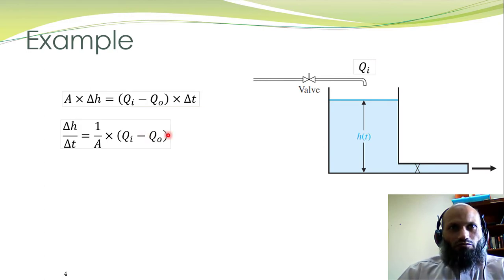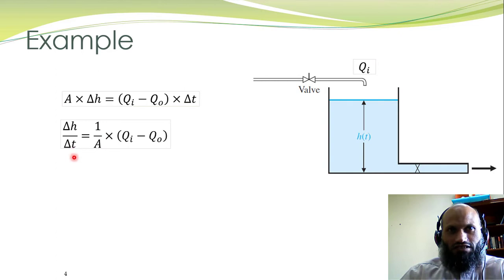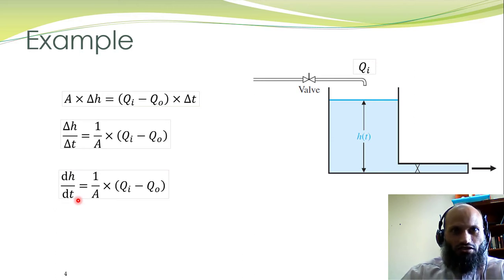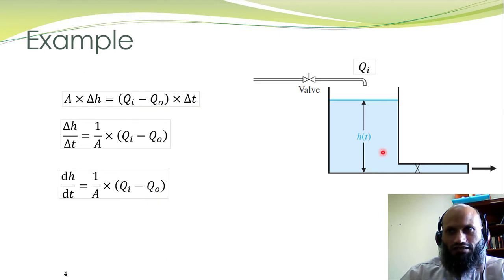The same expression can be rewritten by bringing A to the right-hand side and delta-T to the left-hand side. As delta-T tends to zero, this equation transforms into a differential equation. Furthermore, we know that Q_0, the outflow rate, depends on the type of flow.